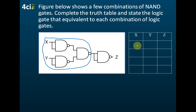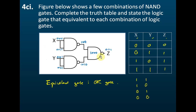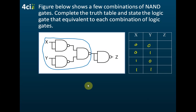So if the input is 0, 0, 1, 1 and 0, 1, 0, 1, then the output here will be 0, 1, 1, 1. We don't need to repeat all the working again — we can straight away say that if the input is 0, 0, 1, 1 and 0, 1, 0, 1, the output here is 0, 1, 1, 1.